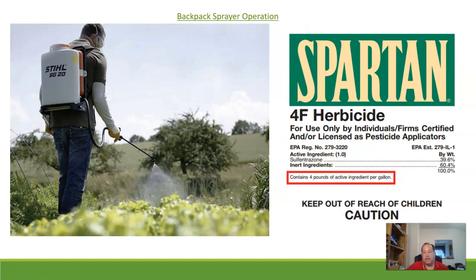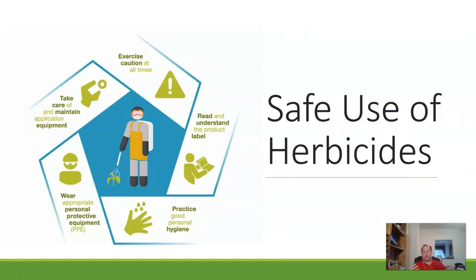The other big part is making sure we get our mix right. For this Spartan herbicide, it shows the active ingredient sulfentrazone and says four pounds of active ingredient per gallon. That means the active ingredient is being mixed in with other things, so we have to make sure we get our mix correct when doing applications. That takes us into the safe use of herbicides — it can be harmful to plants and to us.